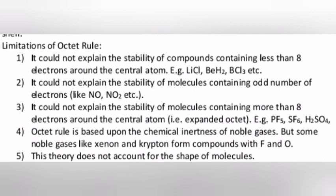Third, it could not explain the stability of molecules containing more than 8 electrons around the central atom, e.g. PF5, SF6, H2SO4. Fourth, octet rule is based upon the chemical inertness of noble gases, but some noble gases like Xenon and Krypton form compounds with F and O. Fifth, this theory does not account for the shape of molecules.